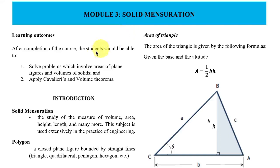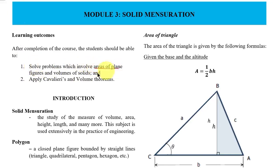Module 3: Solid Mensuration. For our learning outcomes, after completion of the course, students should be able to: number one, solve problems which involve areas of plane figures and volumes of solids; number two, apply Cavalieri's theorem and volume theorems. So based on our learning outcomes, most of the time you are going to solve for area of plane figures and volumes, and apply Cavalieri's theorem.